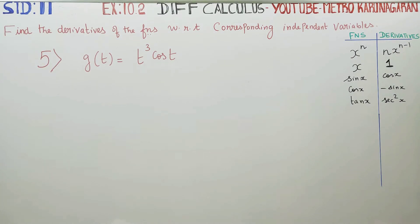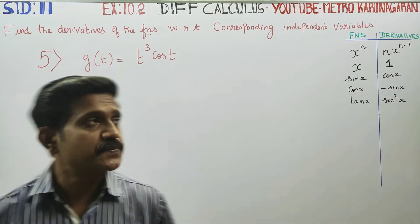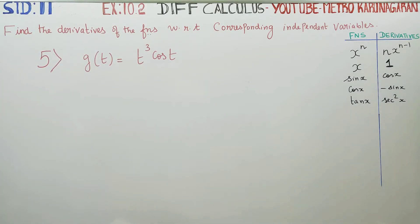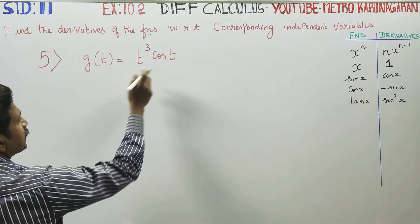Dear Learn Standard Students, in exercise number 10.2, sum number 5, find the derivative of the function with respect to corresponding independent variables. This is independent variables, not t.